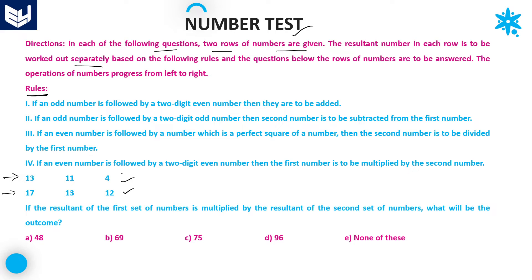Now we will see the rules one by one. Rule 1: if an odd number is followed by a two-digit even number, then both are added. Rule 2: if an odd number is followed by a two-digit odd number, then the second number is subtracted from the first number.